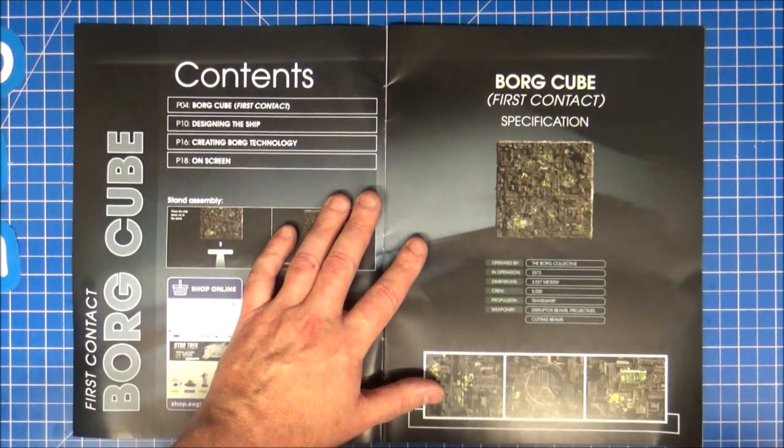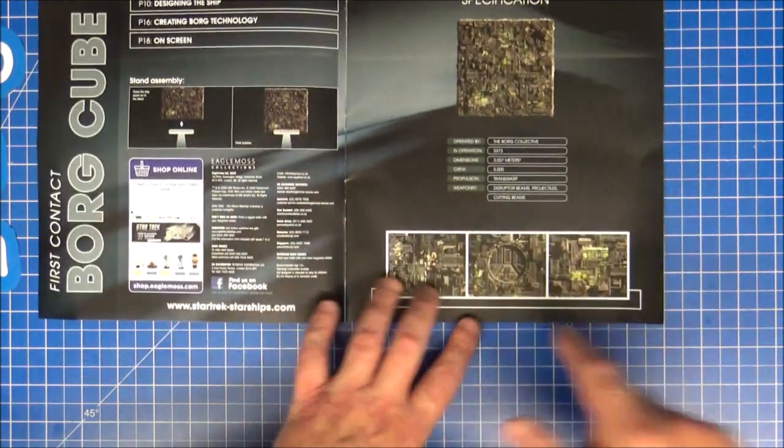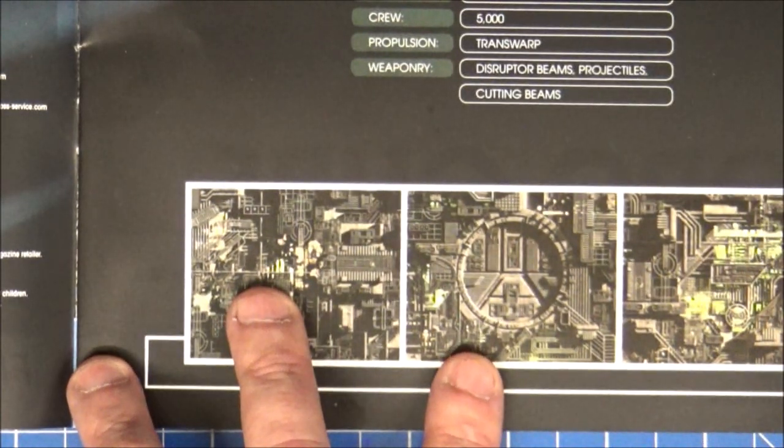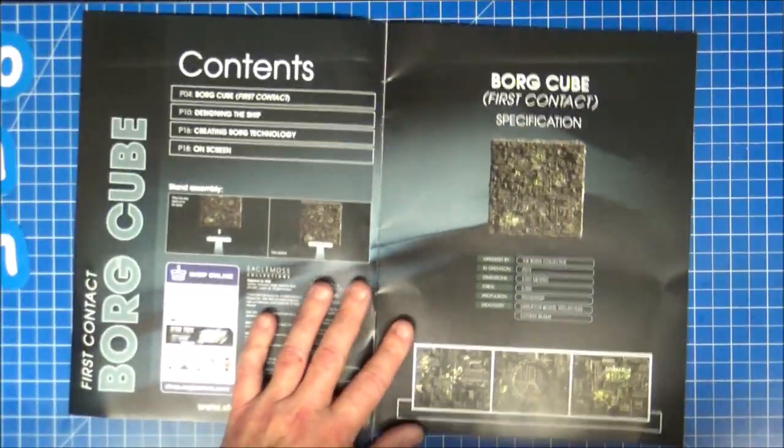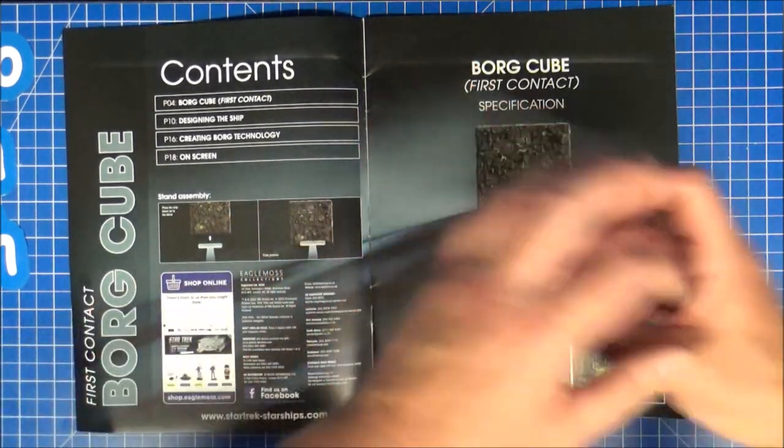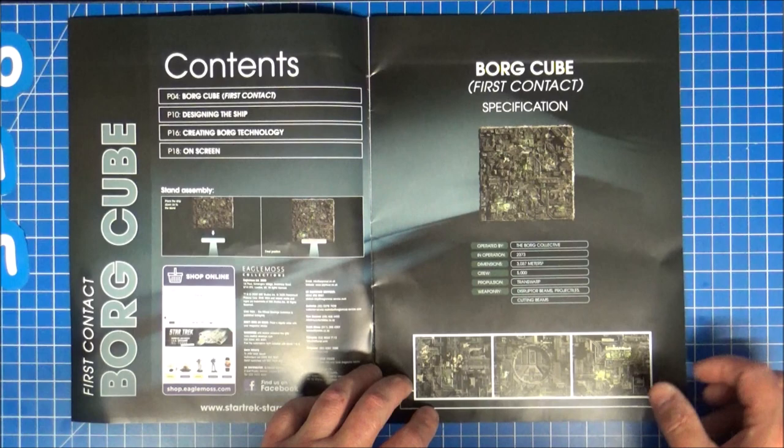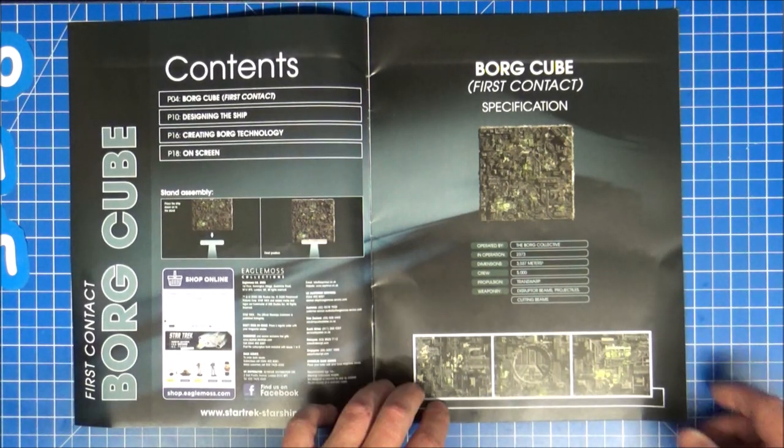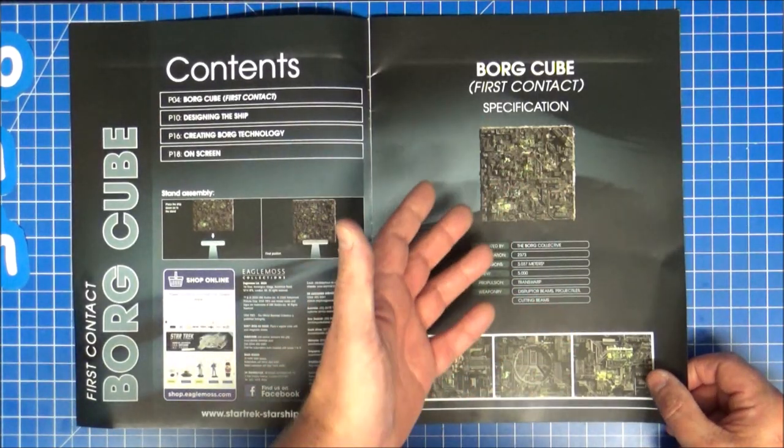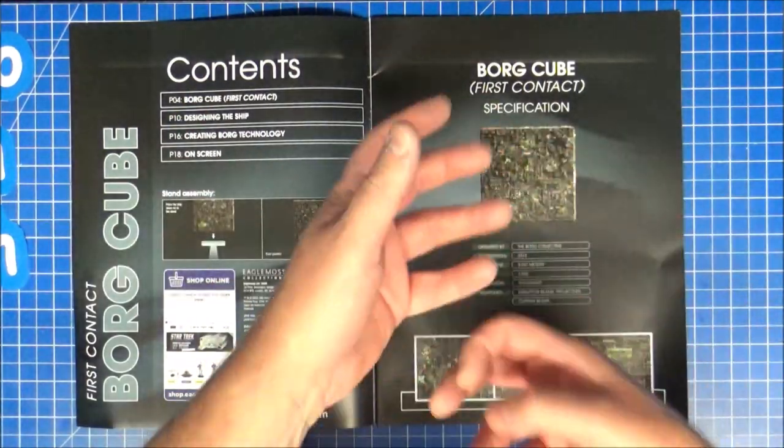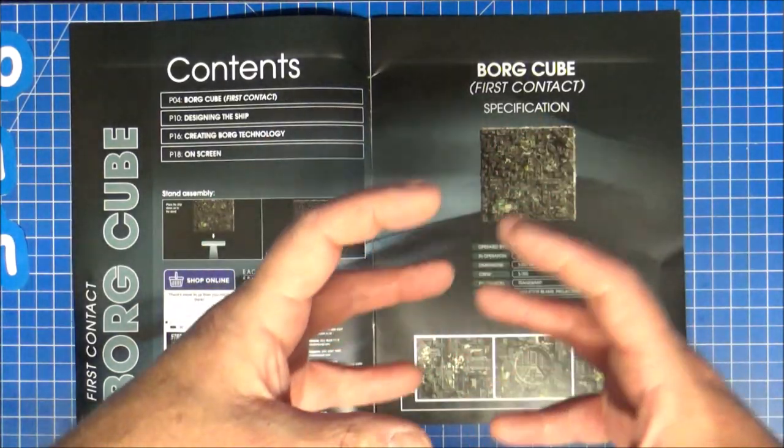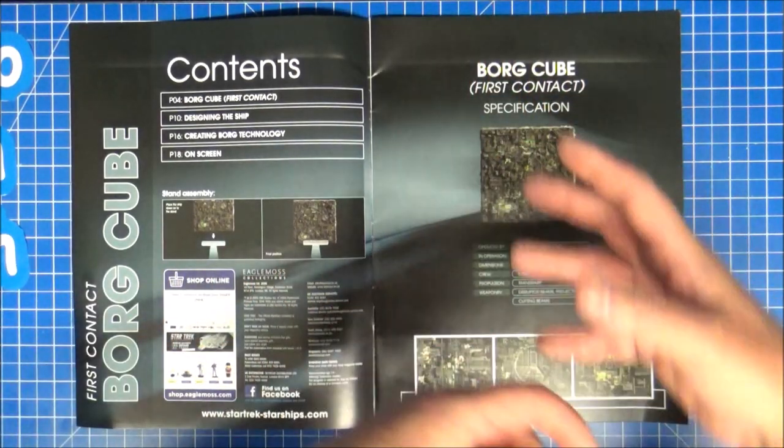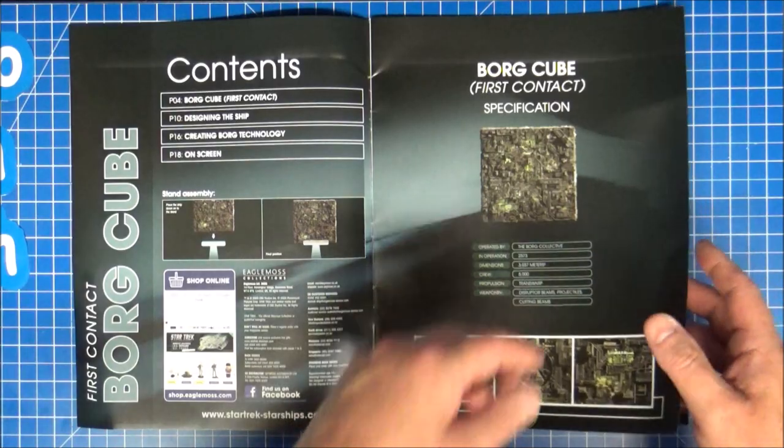Let's have a look. All I'm looking out for on here is that launching pod for the Borg sphere, which the Borg Queen tried to escape with, and then they beamed onto the Enterprise. The sphere launched and then the Enterprise-E almost destroyed that ship. Cutting beams, disruptor beams, projectiles. Propulsion transwarp. Well, technically they probably had a transwarp generator somewhere inside which then opened the conduits. We first heard transwarp with the Excelsior, which had transwarp engines that would power it to ridiculous speeds, whereas it evolved into this with opening the conduits.